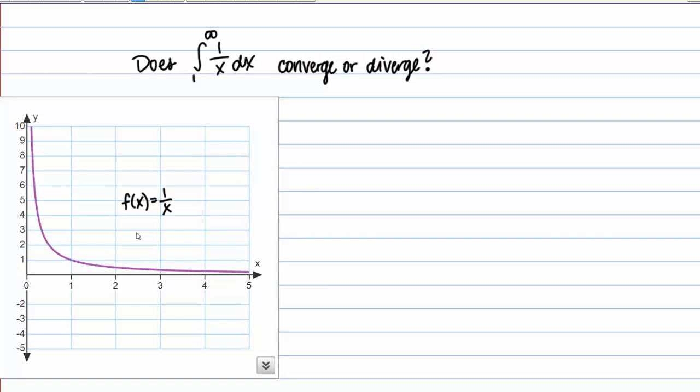So if I were to try to shade that in my graph, well I'd start here at x equals 1, and then I'd be shading under the curve here. But since my integral goes to infinity, this region is going to continue on and on and on and on forever.